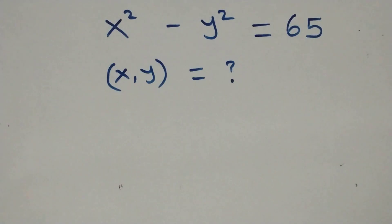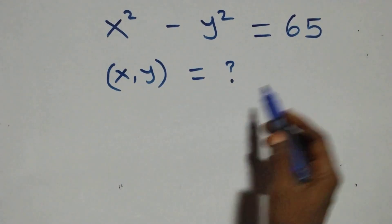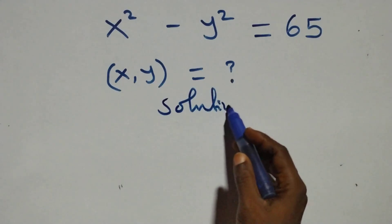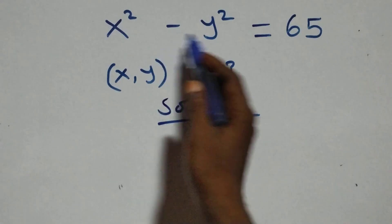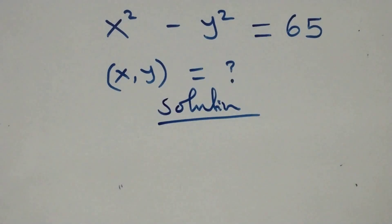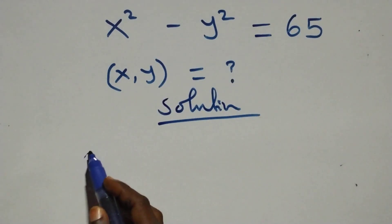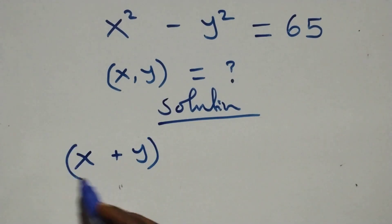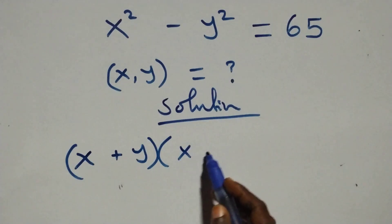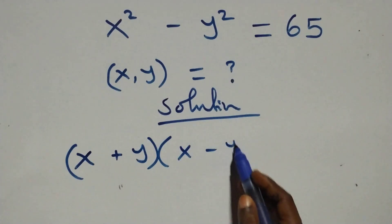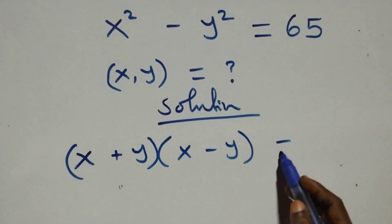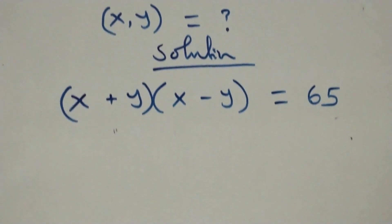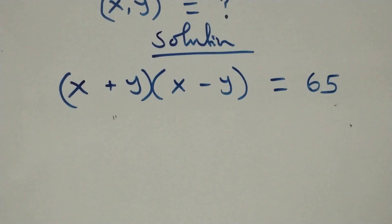Welcome to how to solve this nice algebraic equation. From what we have here, we can rewrite this as a difference of two squares, and that becomes (x + y)(x - y) equals 65 on this side.